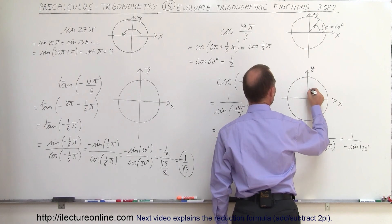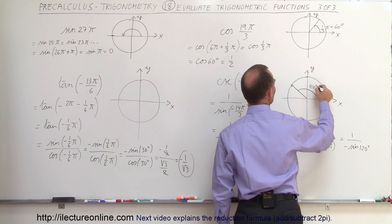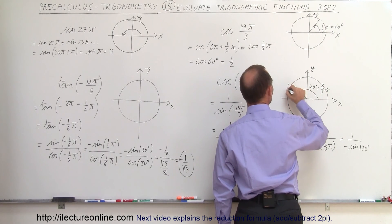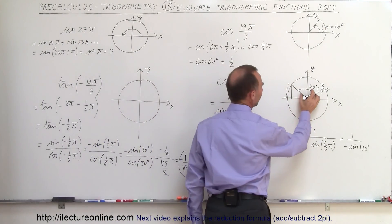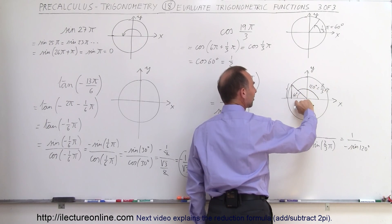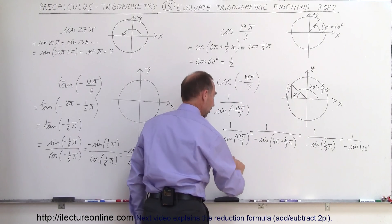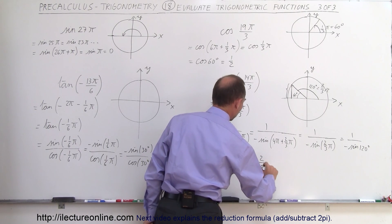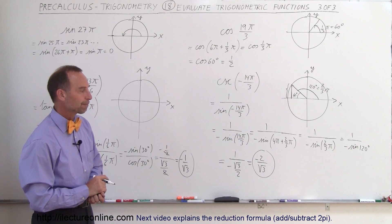120 degrees places us at that point on the unit circle — that's 90 plus 30 degrees, which is 2/3 π. We're finding the sine, which is the y-value at that side. Since this angle is 120 degrees, the reference angle is 60 degrees, so the sine of 120 degrees is the same as the sine of 60 degrees, which is √3/2. So this becomes 1 over negative (√3/2), and taking the inverse gives negative 2/√3, which is the answer for the cosecant of minus 14π/3.